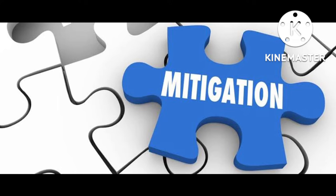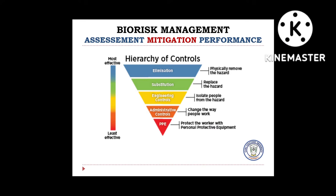The second fundamental component of the risk management model is mitigation procedures. Biorisk mitigation measures are actions and control measures put into place to reduce or eliminate the risks associated with biological agents and toxins. There are five major areas of control that can be employed in mitigating risks. In the hierarchy of controls, the most difficult to implement but most effective mitigation measure is elimination, while the easiest to implement but least effective is personal protective equipment.